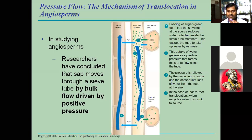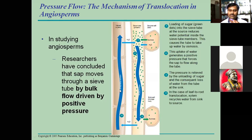Xylem and phloem are parallel, running together: xylem moves water in the upward direction and phloem moves food in the downward direction, so they are in continuous flow. Food material moves from one sieve tube element to the next sieve tube element. Where there is a sink cell with a need for food material, the food is moved there, and the water — present in larger amount — is again transported to the xylem and moves upward to reach the upper parts of the plant, including the leaves.